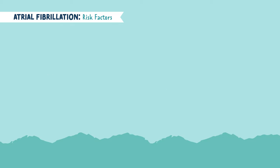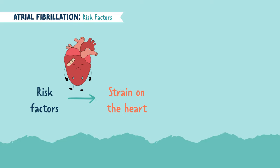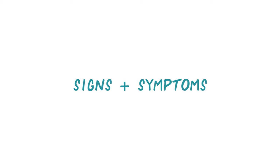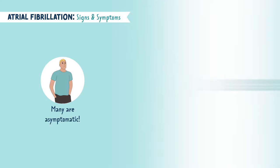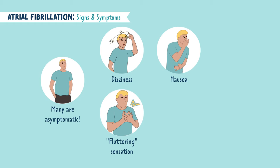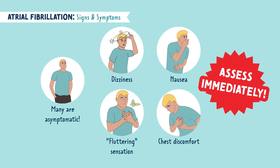Zooming out and looking at all these risk factors, they all have something in common — they all put strain on the heart, which can send it into a state of chaos causing irregular rhythms. Many patients with AFib are asymptomatic and may be unaware that their heart is even beating irregularly. Some might report feeling dizziness, nausea, and even a fluttering feeling in their chest or chest discomfort. It's very important that these are assessed right away.